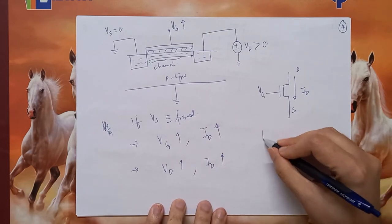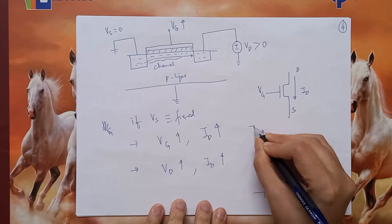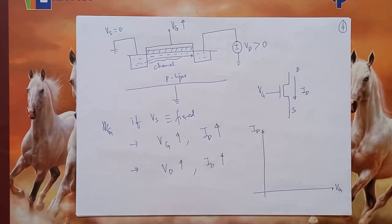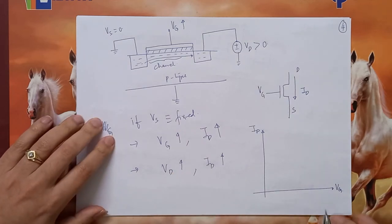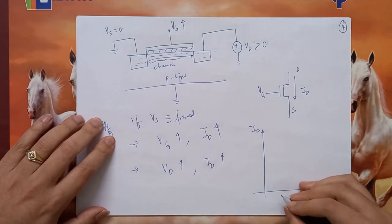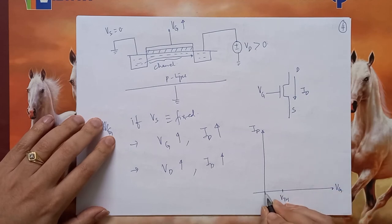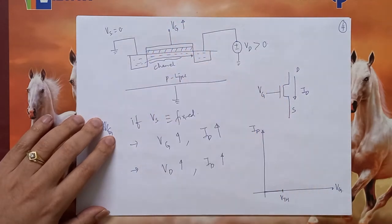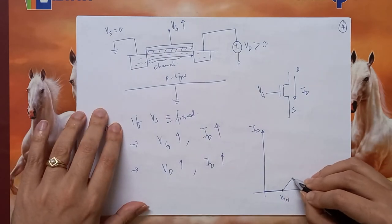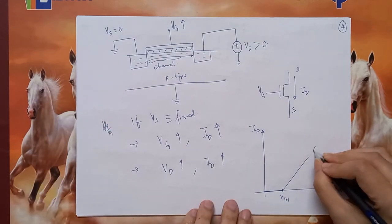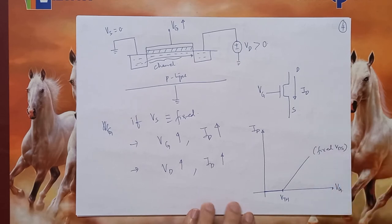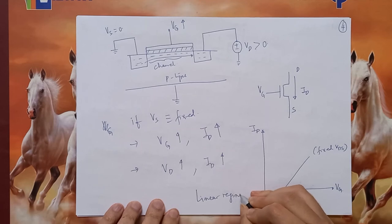Let us draw a graph of ID versus Vg with Vds fixed at some positive value. If Vg is essentially 0, the ID will be 0 because the electrons will not be pulled — Vg must exceed the threshold voltage Vth. Below that, it will be 0. As we increase Vg above Vth, more electrons are pulled and the current increases in a linear fashion. This is called the linear region of operation.